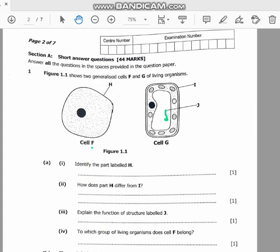Then we go to the last part of question 1A: to which group of living organisms does cell F belong? Cell F is an animal cell, so it belongs to Animalia, eukaryotic cells.